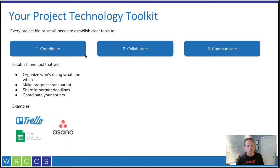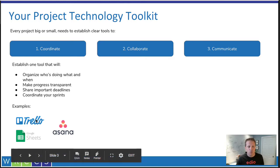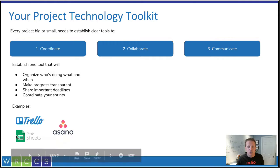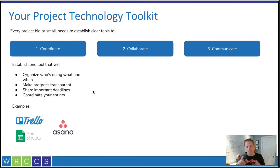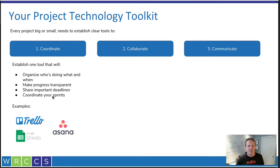In order to coordinate, we're talking about who's doing what and making progress transparent, as we discussed in the agile mindset. How do we share important deadlines? If we're going to decide on a sprint rhythm, how are we organizing what's going to be accomplished during the sprint and how do we capture all that? These are basically project management tools. Examples include Trello and Asana. For a small, simple project, you can also use Google Sheets, which has features to help you track and coordinate discussions around projects.